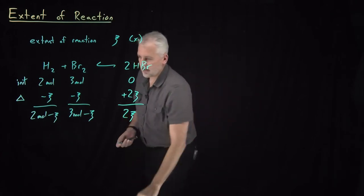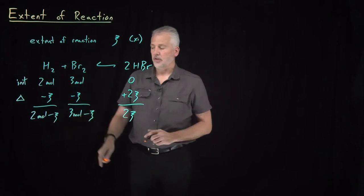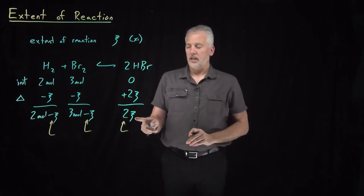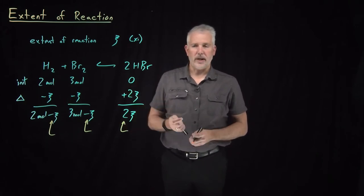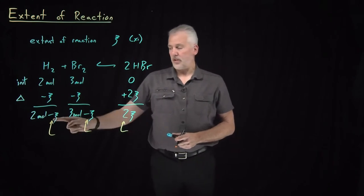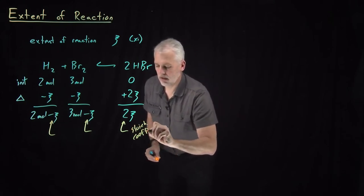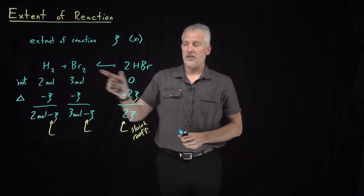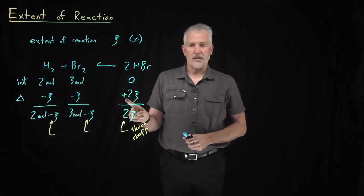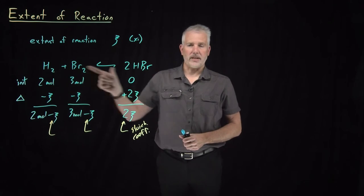Notice the coefficients — negative one, negative one, positive two — that appear in front of the extent of reaction. First, they match the stoichiometric coefficients in the reaction: one mole and one mole turn into two moles, so I lose one mole, lose one mole, gain two moles. Second, notice the signs: reactants are consumed with a negative sign, products are created with a positive sign. The signs are determined by the stoichiometry and which molecules are reactants versus products.